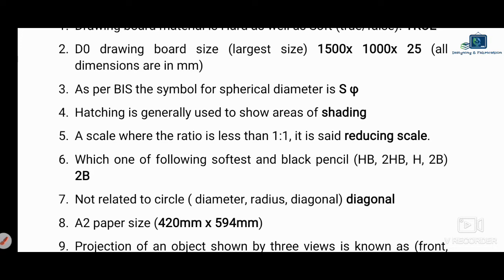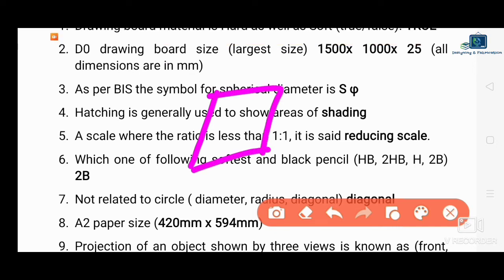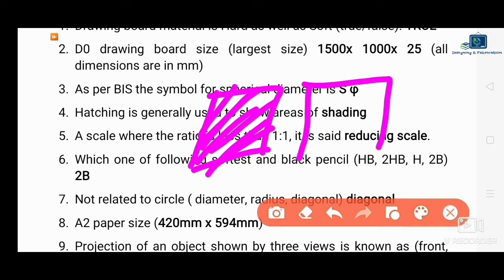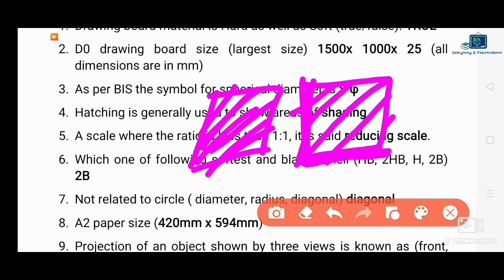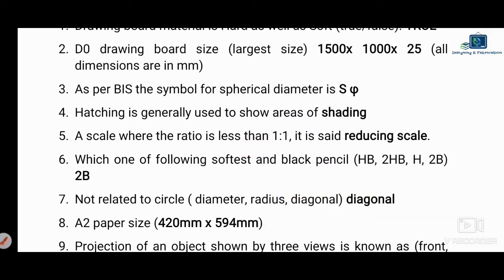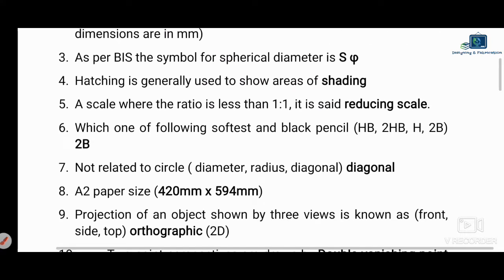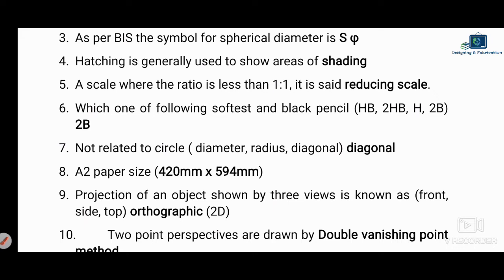Next question: hatching is generally used to show the area of a cut section surface. The hatching line — also called a shading line — is drawn at 45 degrees to the horizontal or vertical axis.